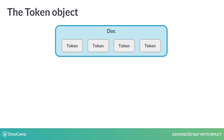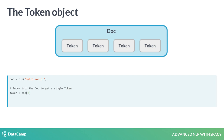Token objects represent the tokens in a document — for example, a word or a punctuation character. To get a token at a specific position, you can index into the doc.